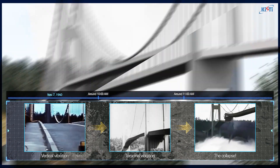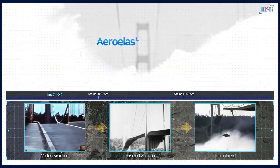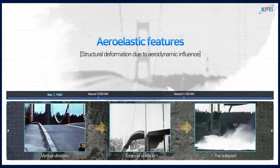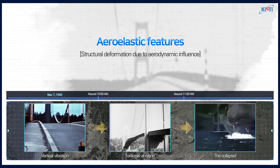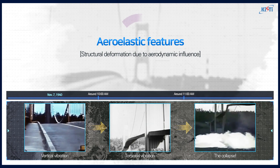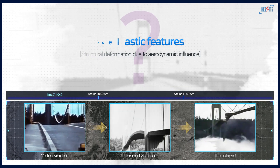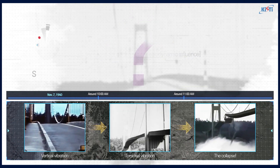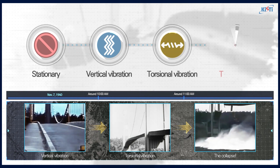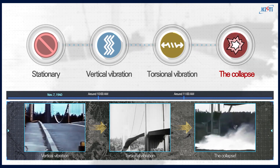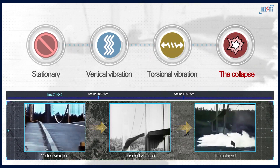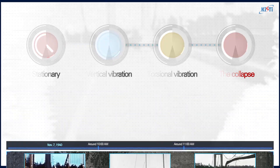The collapse of the Tacoma Narrows Bridge was a major incident caused by the aeroelastic features of the bridge, but the exact process of the collapse has still yet to be uncovered. However, it has been reported that a development in the motion of the bridge from vertical vibration to torsional vibration led to the collapse.